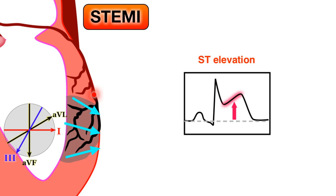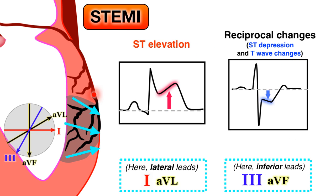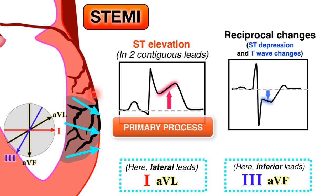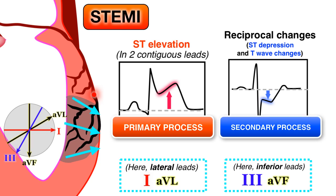Reciprocal ST depressions and T wave changes can be seen in the setting of STEMI. However, it is important to remember that when ST elevations are seen in two contiguous leads in the same territory, always address it as a primary process and attribute the ST depressions and T wave inversions found elsewhere as secondary ischemic changes.